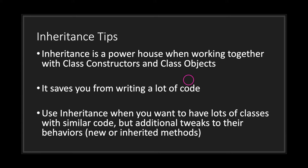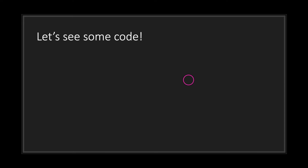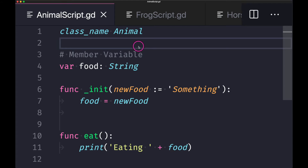Some tips about inheritance: inheritance is very powerful when used with class constructors and class objects. It saves you a lot of time when writing similar class code, especially if you are deriving many classes from your base class. Use inheritance when you want to have lots of classes with similar code but with additional tweaks to their behaviors — whether those are new or inherited methods.